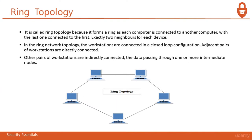Next is the Ring topology. It is called a Ring topology because each computer is connected to each adjacent computer, with the last one connected to the first — exactly two neighbors for each device. The workstations make a closed-loop configuration, with adjacent pairs of workstations being directly connected. If System A wants to communicate with System D, System A forwards the request to B, then to C, then to D. A Ring topology always chooses the shortest possible path between systems.